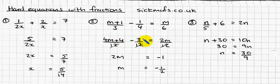so 4 minus 3 is 1, so you've got 4m plus 1 equals 2m.